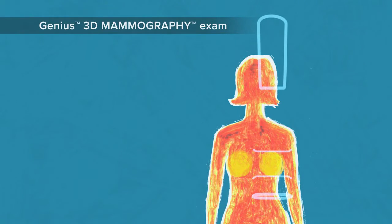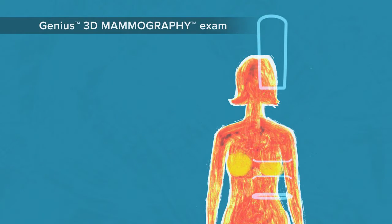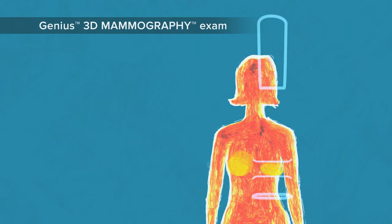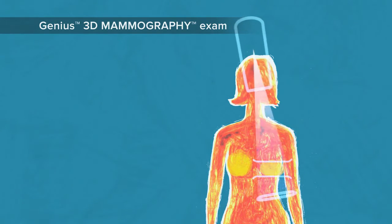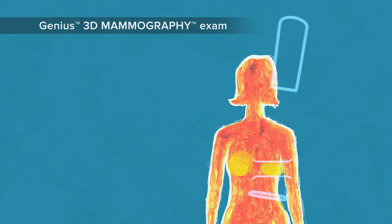A Genius 3D mammography exam looks and feels similar to a regular mammogram. However, the x-ray arm swings over your breast, taking multiple images in a matter of seconds.